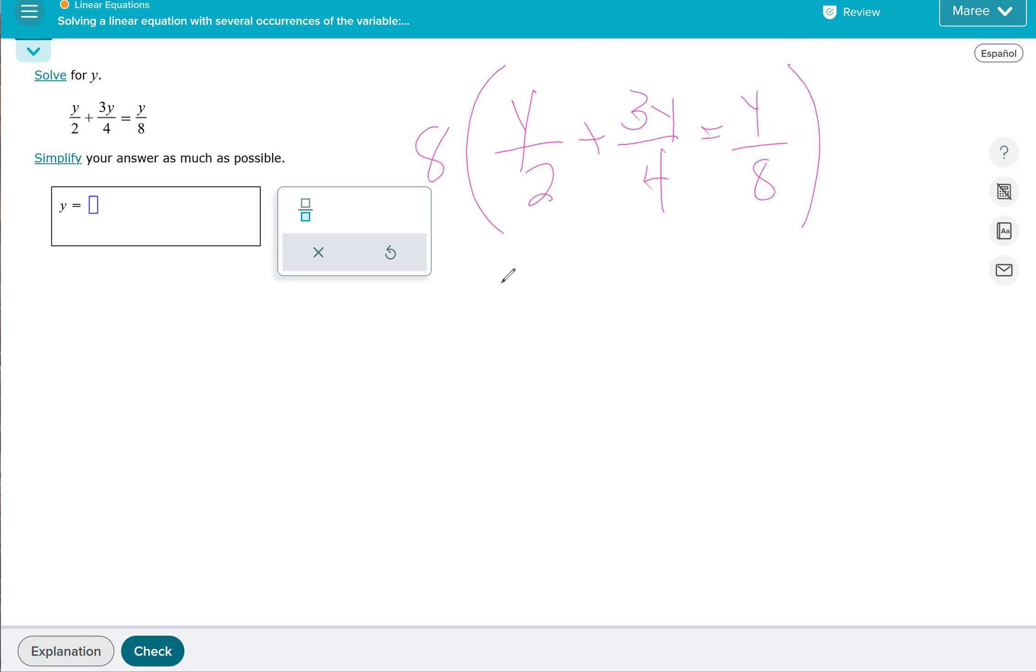First we divide by the denominator. 2 goes into 8 four times, so we have 4y. 4 goes into 8 two times and then we have to multiply that by the 3, so we have 6y. 8 divided by 8 is 1, and that's going to equal y. That's what it means by occurrences of the variable.